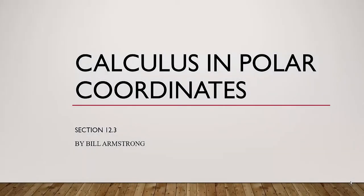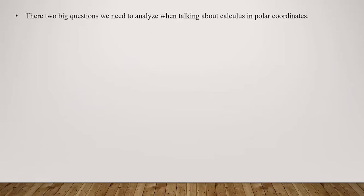Alright folks, section 12.3: we're going to look at calculus in polar coordinates. We still have the same two big questions from Calculus 1. Big question number one is the slope of a tangent line — the instantaneous rate of change — and big question number two is area.